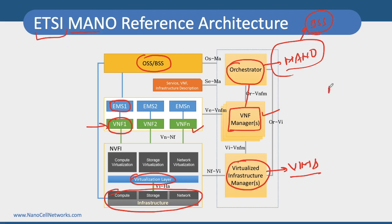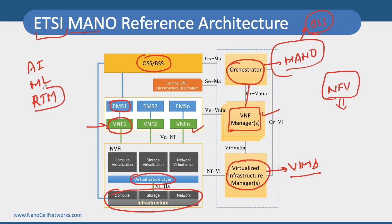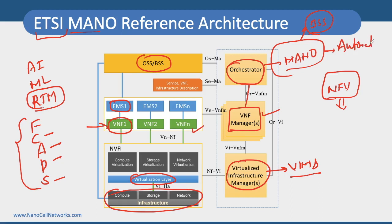Whenever people talk about NFV — Network Function Virtualization — MANO follows a similar reference architecture. Beyond the basic architecture, MANO will be powered by artificial intelligence, machine learning, and real-time monitoring and control of the network. This is similar to what we used to call FCAPS: Fault management, Configuration management, Accounting, Performance management, and Security management. Mostly it will be powered by automation, taking automation to a whole new level — that is where MANO plays an important role.